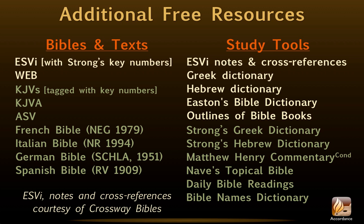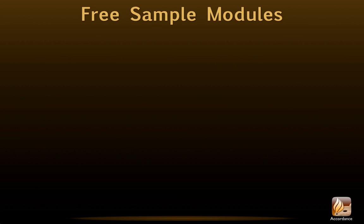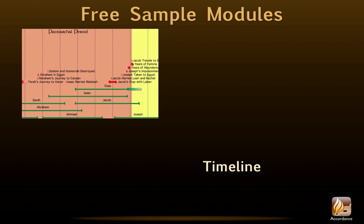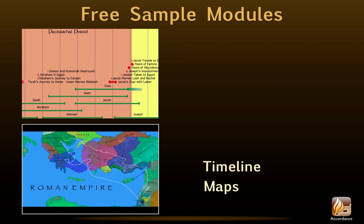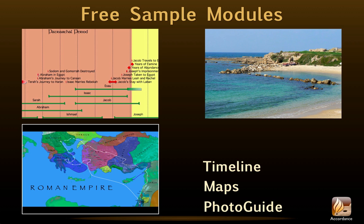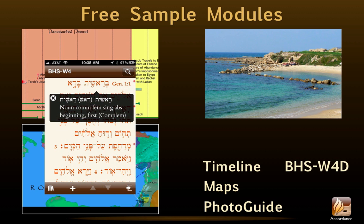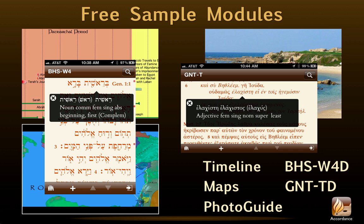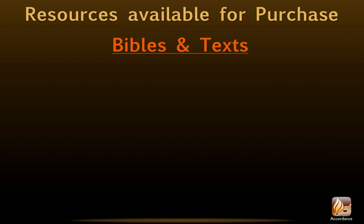Our initial download also includes five sample modules, just so users can get a feel for the power of this app. These include the Timeline, Maps, and PhotoGuide 3 samplers, all of which permit pinch to zoom. We also receive three chapters each of the grammatically tagged BHSW4 Hebrew Bible and the Nestle-Allen 27 Greek New Testament.